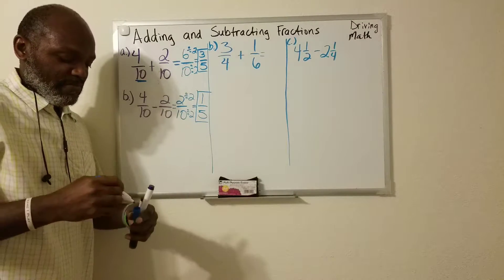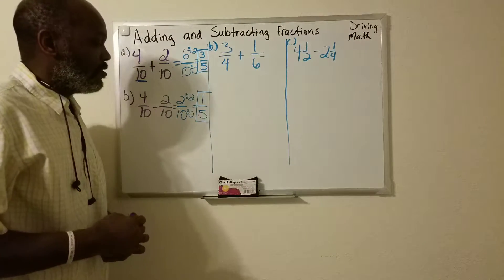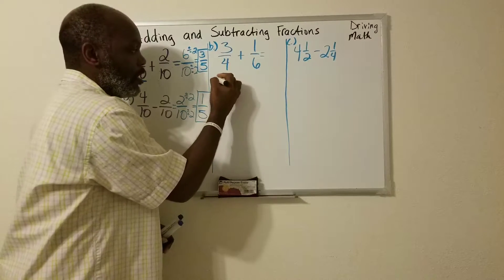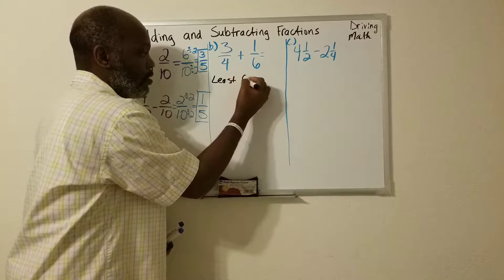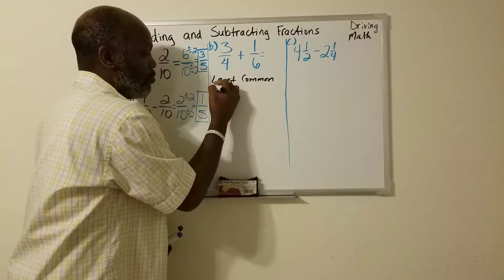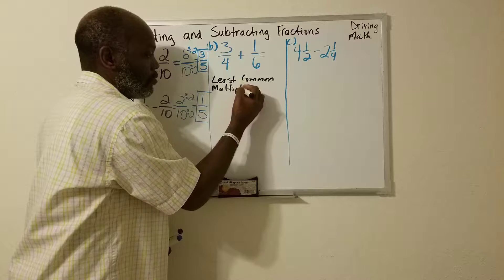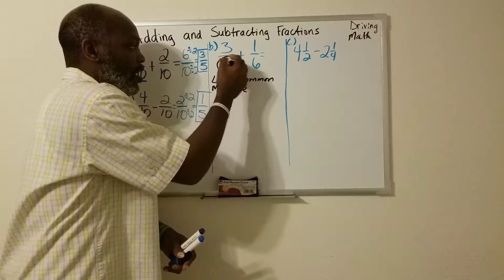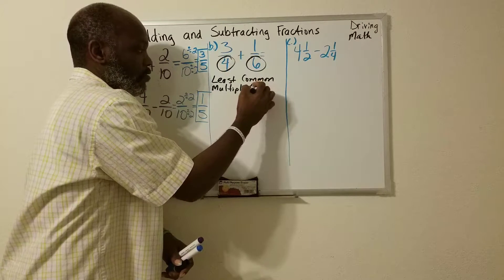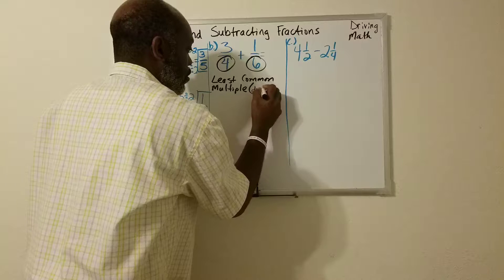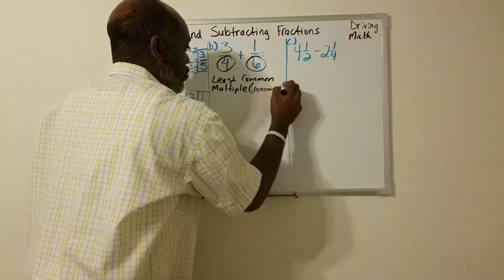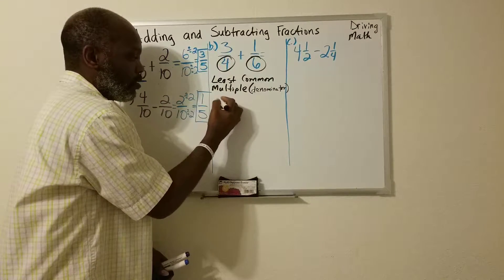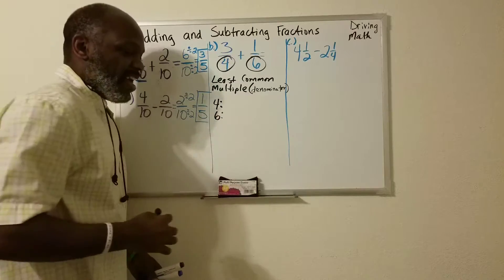Pretty simple, hopefully. All right. So now you see that the denominators are different. So we have to find the least common multiple, not factor, but multiple. We're going to look at 4 and 6. You remember like 5, 10, 15, 20, 25, those are multiples.